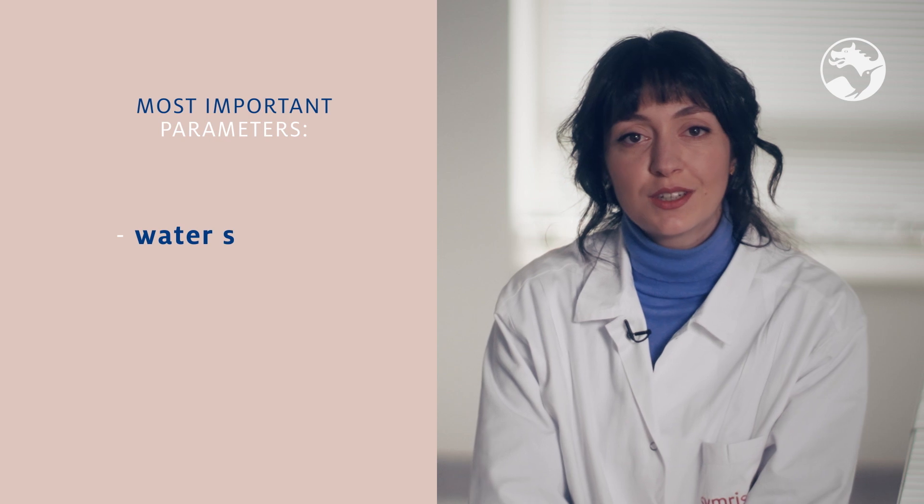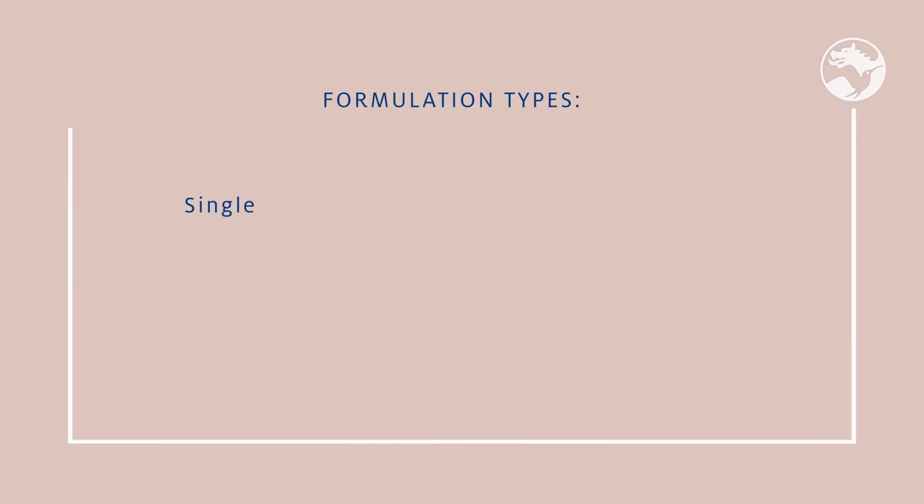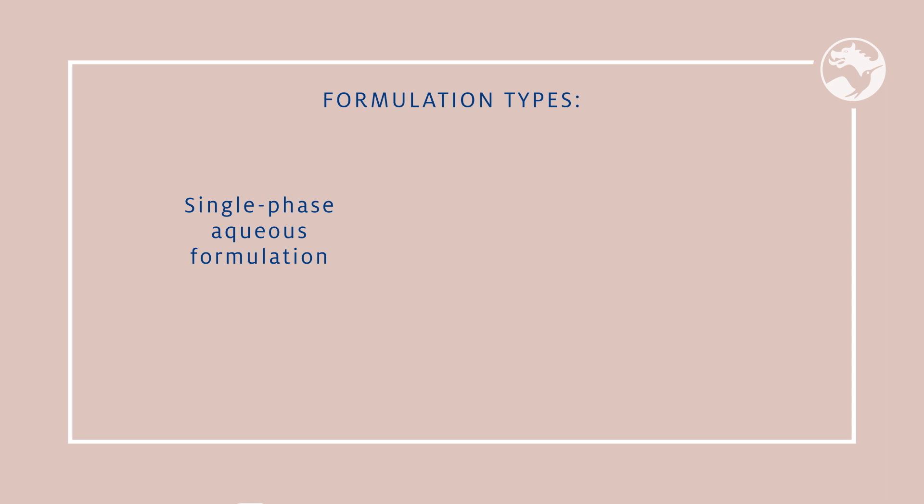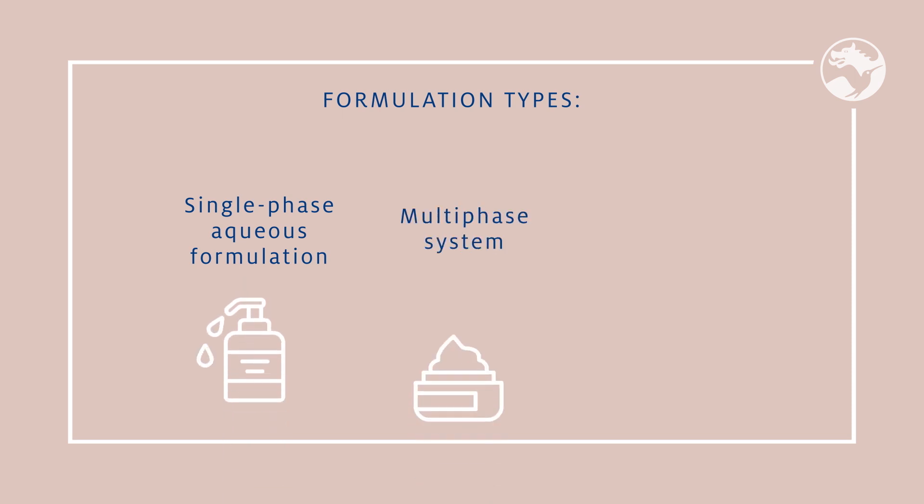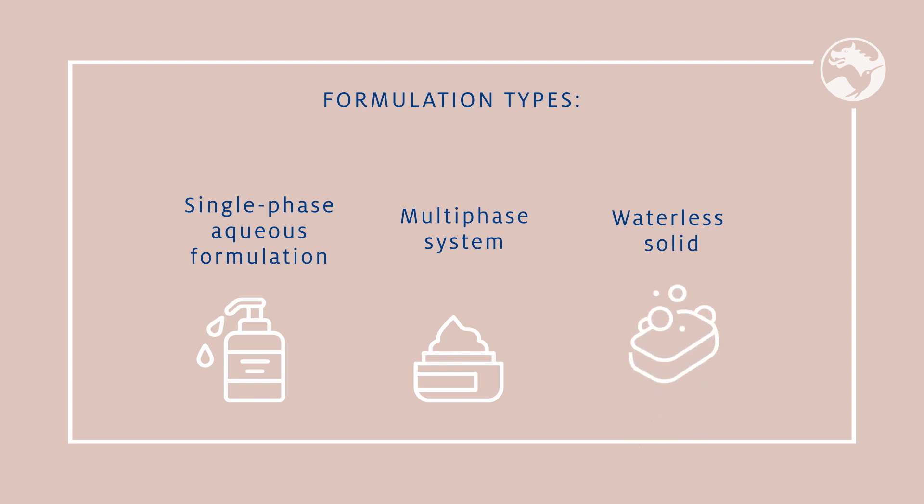Many of these combinations are available commercially as ready-to-use blends. It's important to not only make sure that the ingredients complement each other for broad-spectrum protection, but also to select the right ingredients based on the particular formulation and the performance we expect from them. We need to understand the characteristics of the ingredients and their compatibility with the formulation as a whole. One key aspect for the selection is the type of formulation — the most important parameters being water solubility and partitioning. Is it a single-phase aqueous formulation such as a liquid soap, a multi-phase system such as an emulsion, or a waterless solid such as a dry shampoo?